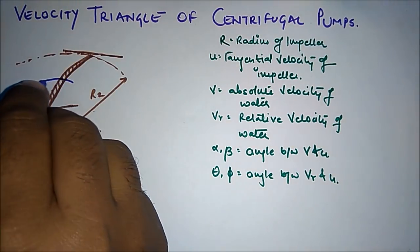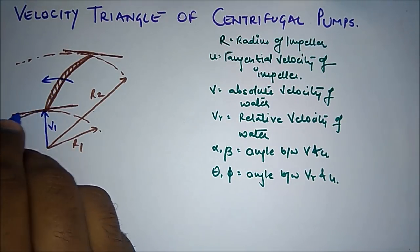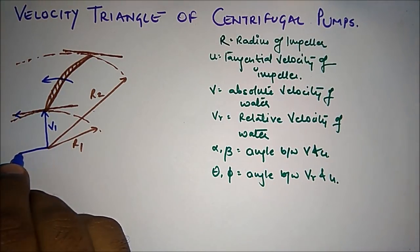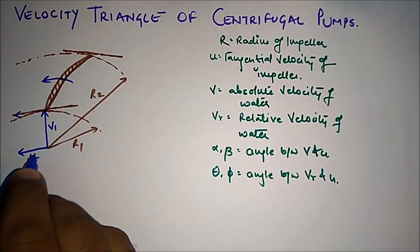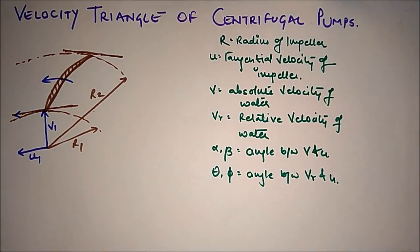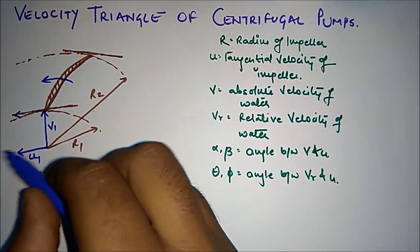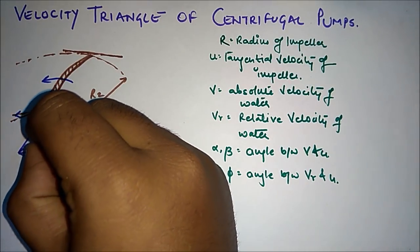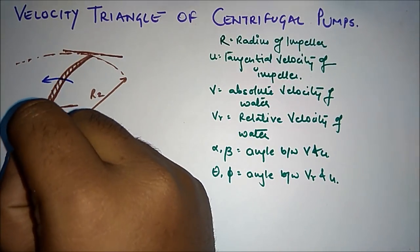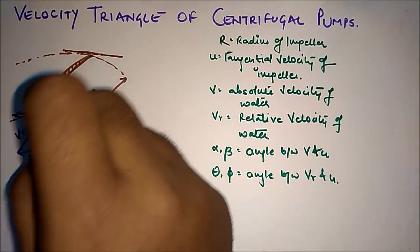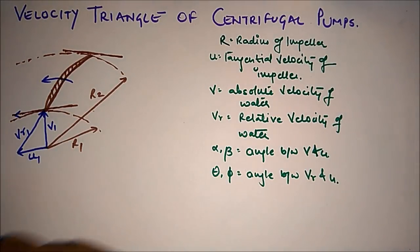If the blade is moving in this direction, the tangential velocity will be in this direction. So this is tangential velocity U, and since this is the inlet triangle, this is U1. Finally, the water will enter with the relative velocity of V and U combined, so this will be the relative velocity Vr1 with which water enters the impeller blade.